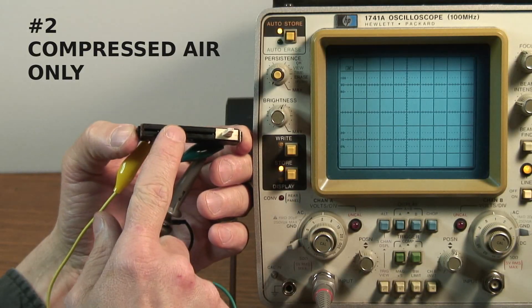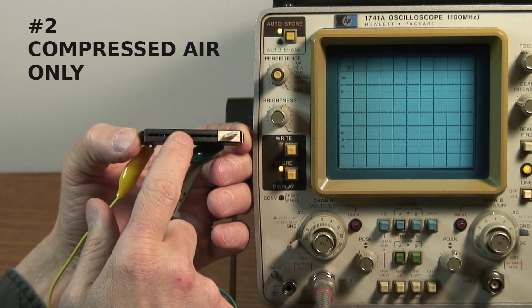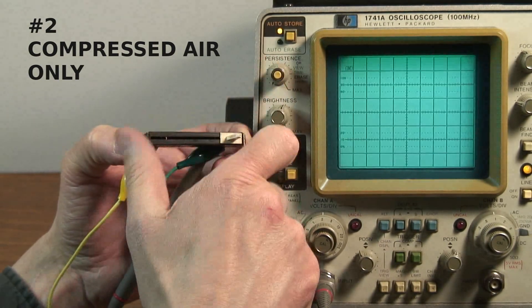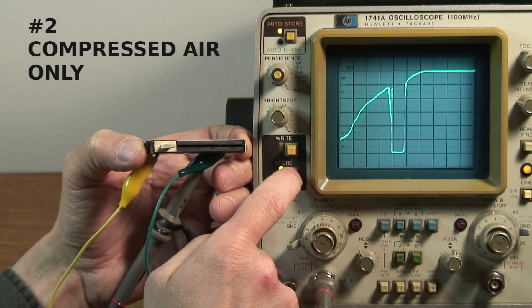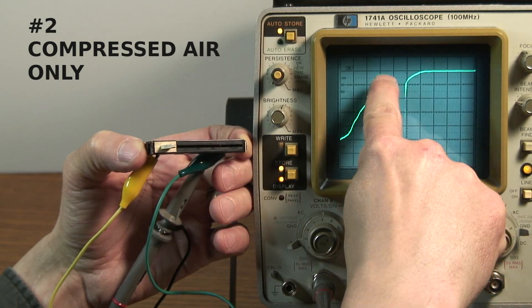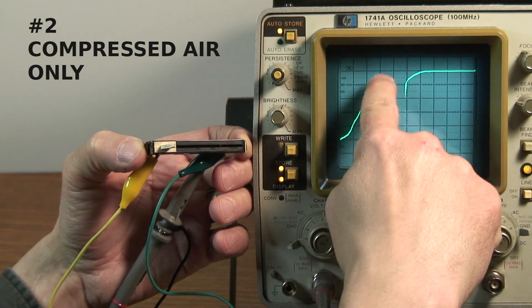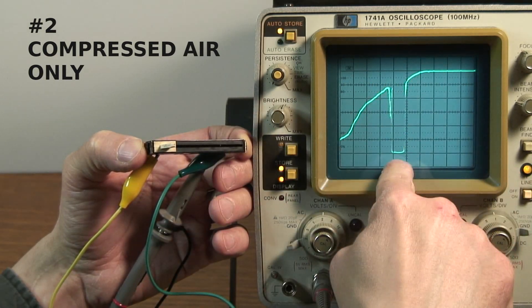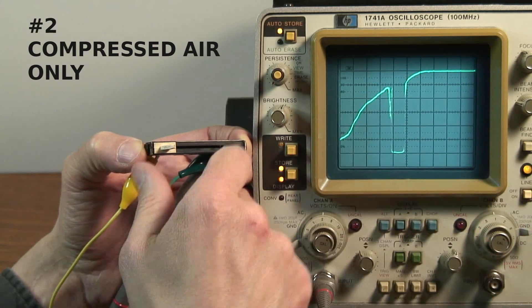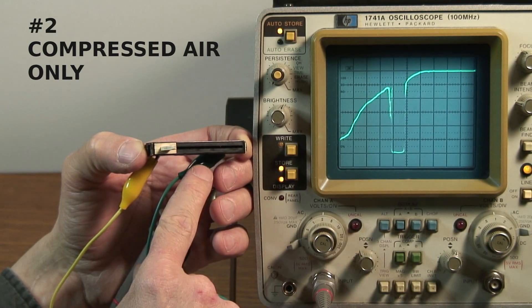This is fader number two. It was the one that was blown out with compressed air, but other than that there was no other cleaning. Yikes. Okay, it was okay at the beginning, but you can still see there's a buildup of grime in the middle where it completely loses contact. The wiper loses contact with the resistive strip. So yeah, a little better, but still not good enough.